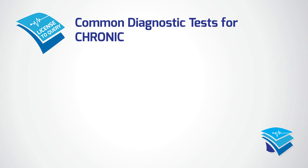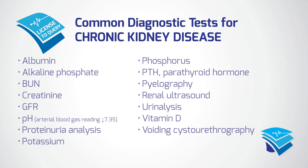Common diagnostic tests for chronic kidney disease include albumin, alkaline phosphatase, BUN, creatinine, GFR, pH levels via arterial blood gas readings, proteinuria analysis, potassium, phosphorus, parathyroid hormone, pyelography, renal ultrasound, urinalysis, vitamin D, and voiding cystourethrography.